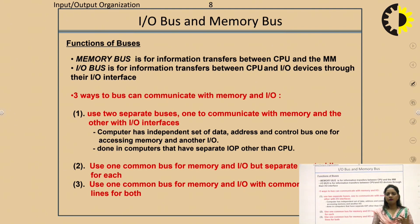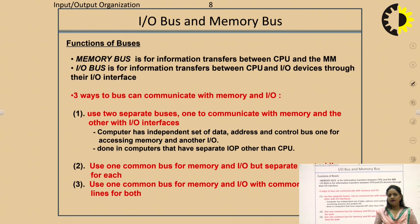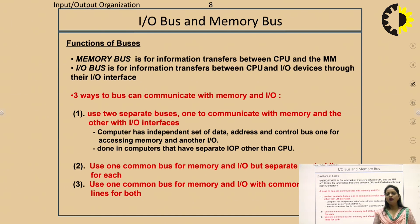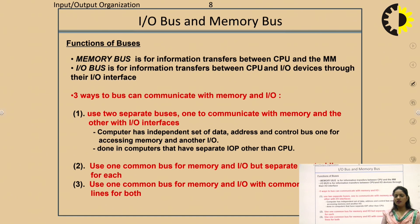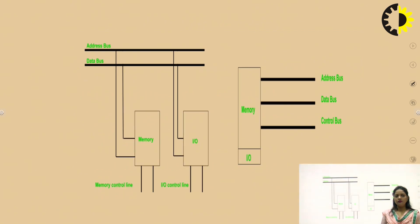There are three organization schemes. First, we can use a separate set of buses for input-output devices and a separate set for memory — separate address, data, and control buses for each. Second, we use a common bus for memory and input-output devices — sharing the data bus and address bus, while using separate control lines for each. Third, we use all three buses commonly for both memory and input-output devices.